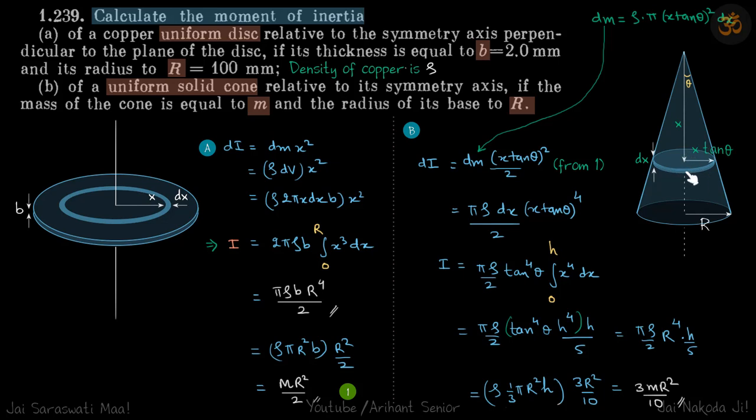Now let's calculate for the cone. It's given that the radius of the cone is R. About the axis, we need to find the moment of inertia.